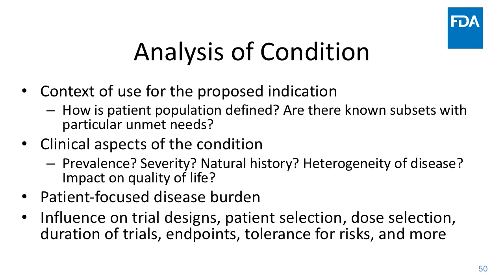Analysis of condition can have a significant influence on trial design. If you're in a rare disease space where the natural history of the disease is very well known, single arm trials with external controls might become much more feasible than in other areas where the natural history is not well understood. Regarding patient selection and dose selection: getting the dose right is incredibly important in the benefit-risk calculus. Think about the condition and what aspects could be used in early phase development — even if not an acceptable endpoint for a registrational trial, perhaps as a pharmacodynamic measure to get the dose right. Analysis of condition should also impact endpoints: what are the endpoints that matter to patients, what is their variability, and what is known about them in the natural history of the disease?